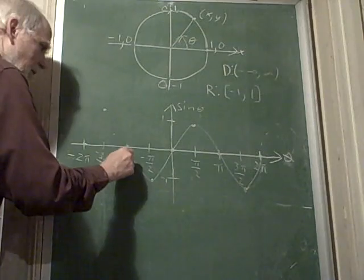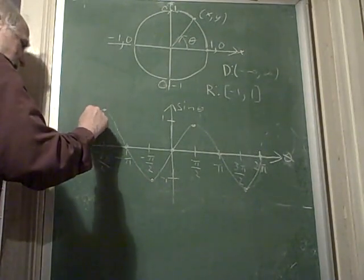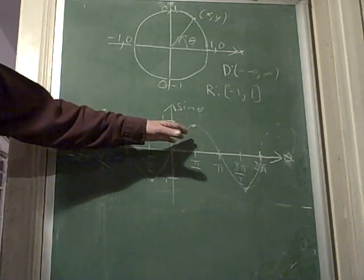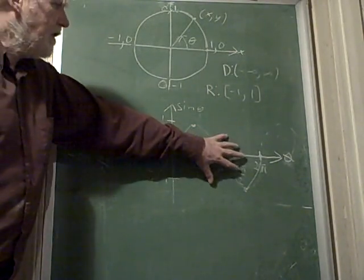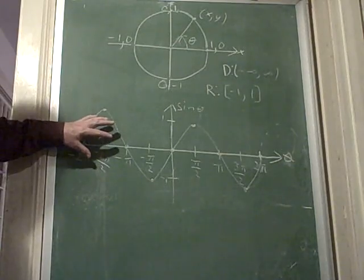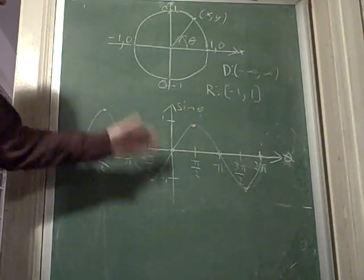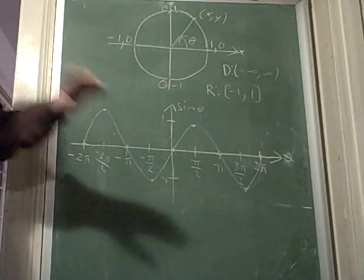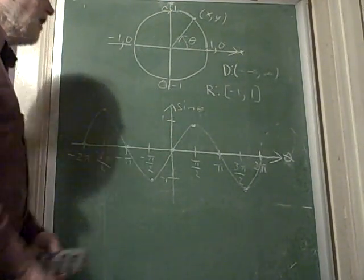Of course, it continues in the same way, like this. And this is a graph of the sine function. Notice that it's an odd function, the sine function. That is, if you took this reflected across the y axis, or the vertical axis, then reflected again, you would get the other side. And this makes it an odd function.